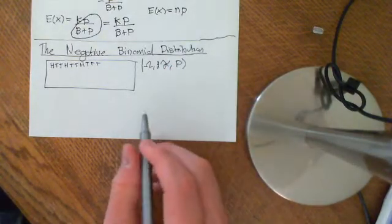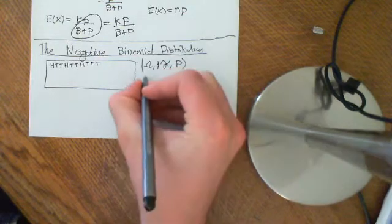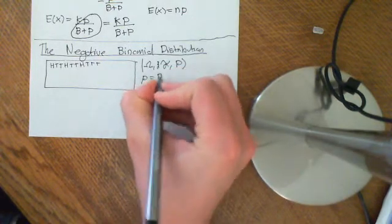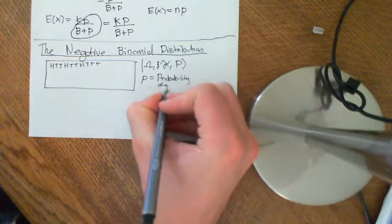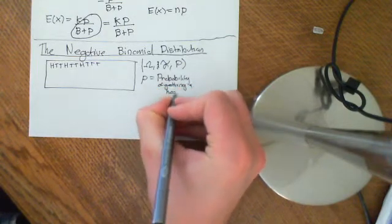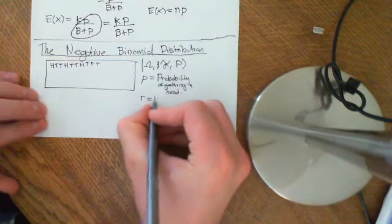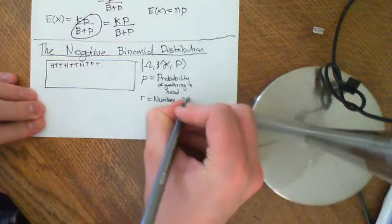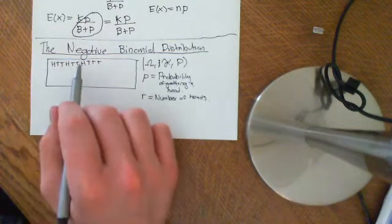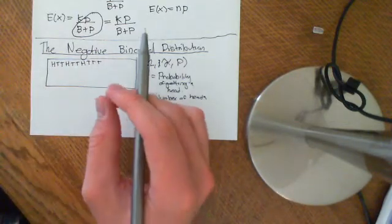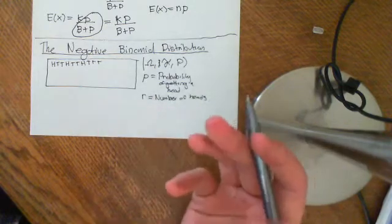The Negative Binomial Distribution has two parameters. First, you need to tell me what's the probability of getting a head — let little p equal the probability of getting a head in a single trial. And the other parameter is some r, which is going to be the number of heads you want to get. The question is: what is the probability that in order to get r heads, you're going to get i tails in the process?